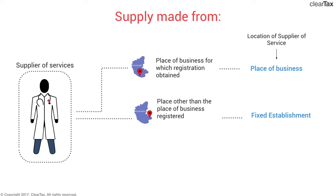For example, if you are a doctor providing service from your clinic in Bangalore, which is your registered place of business, then that will be your location. In case you're not providing services from your clinic in Bangalore but in Mysore, and you have not taken registration from that place but you have a fixed clinic, then that will be your location — it's your fixed establishment. In case you're providing services from both these places but predominantly from Mysore, then that's the location which is most directly concerned with the provision of services, and that's going to be your location.